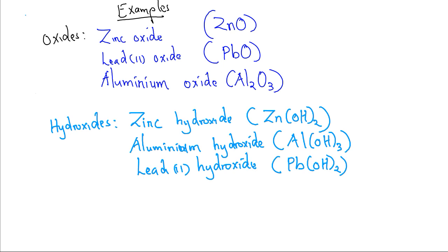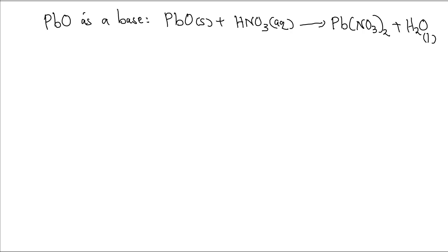Let us now look at the reactions of these oxides, how they react as an acid and a base. The first one is the reaction of lead(II) oxide as a base: PbO plus 2HNO3 dilute forms Pb(NO3)2 plus H2O. Simply forming salt and water, and the equation is fully balanced.